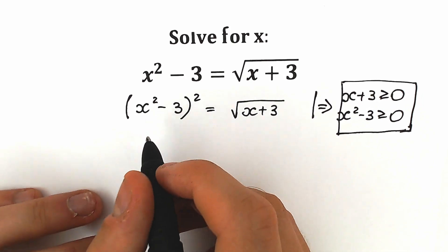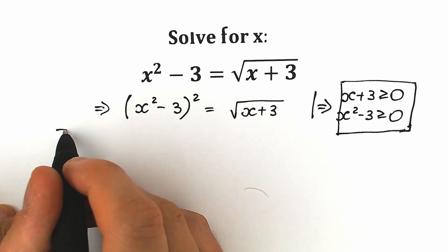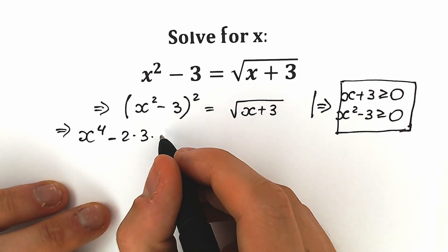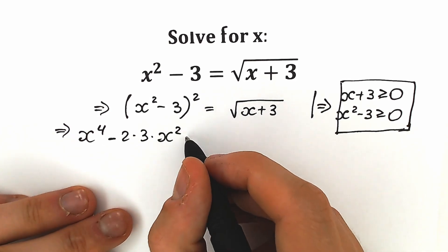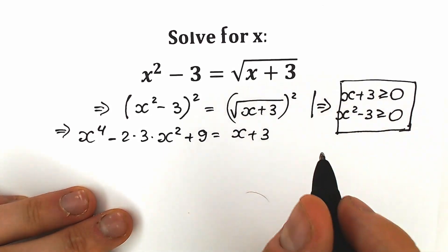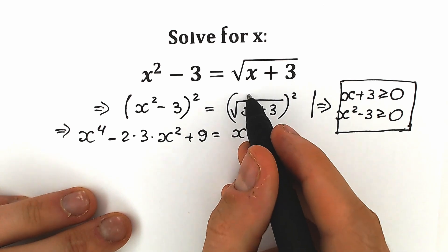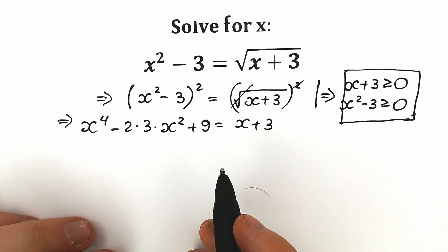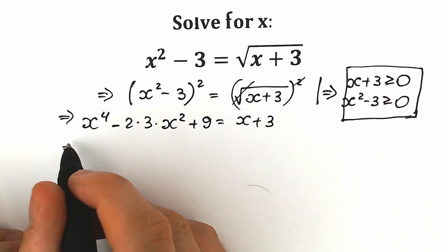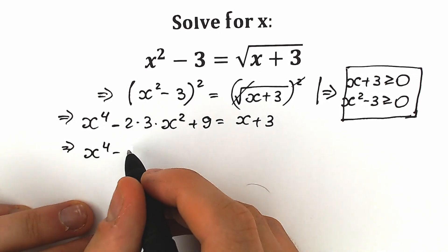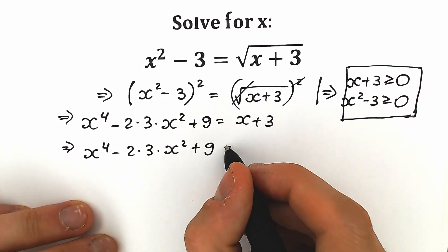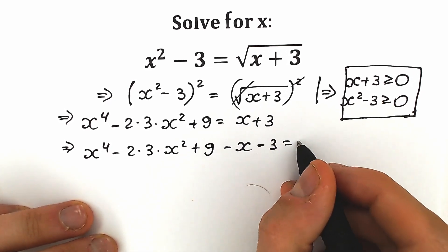Right now let's solve it. When we squared both sides, we have x to the fourth power minus 2 times 3 times x squared, plus 9 equal to x plus 3. We need to square our right side — we cancel the square root sign. Bringing x plus 3 to the left side, we have x to the fourth power minus 6x squared plus 9 minus x minus 3 equal to 0.